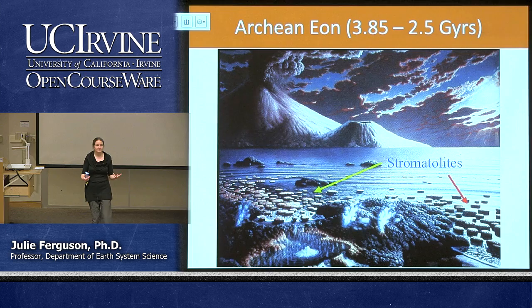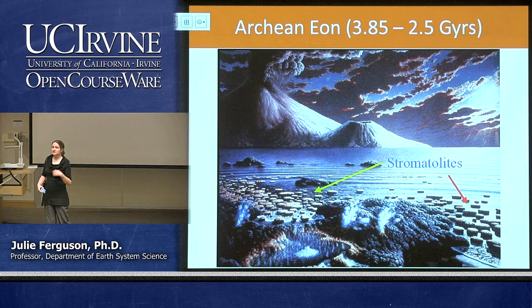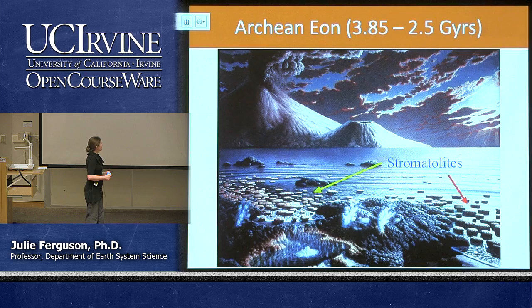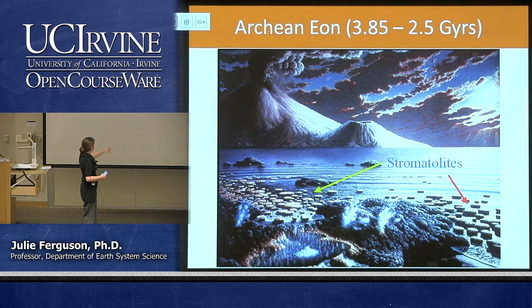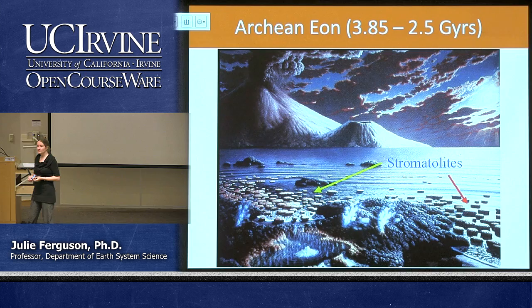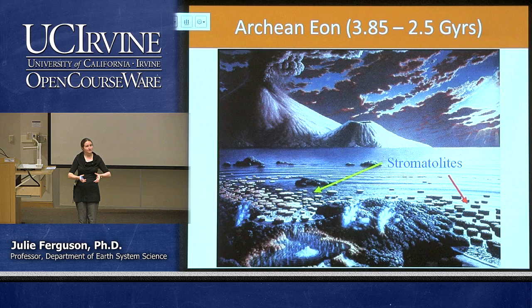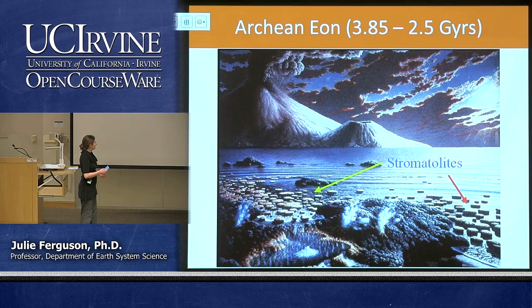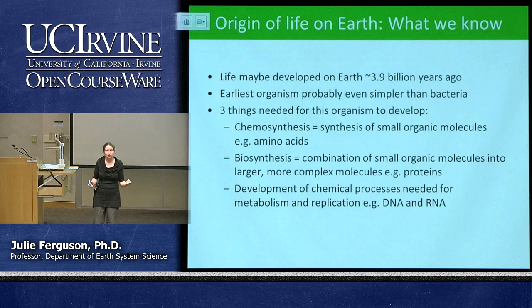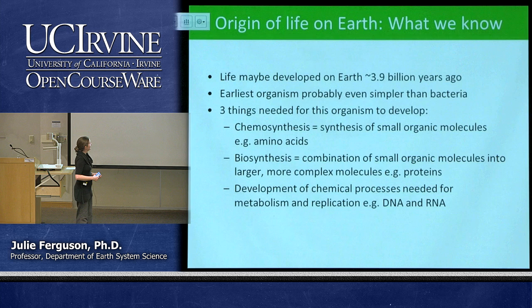The next era, the Archean, from about 3.9 to 2.5 billion years ago, started to become more recognisable. We had oceans, volcanic activity, plate tectonics, and we built up a lot of continental area. Our earliest definitive fossil signs of life are around 3.5 billion years — things called stromatolites. We still see these today off the coast of Australia. They're little colonies of cyanobacteria with filaments that trap sediment and build small columns. These are our first clear evidence of life on Earth.